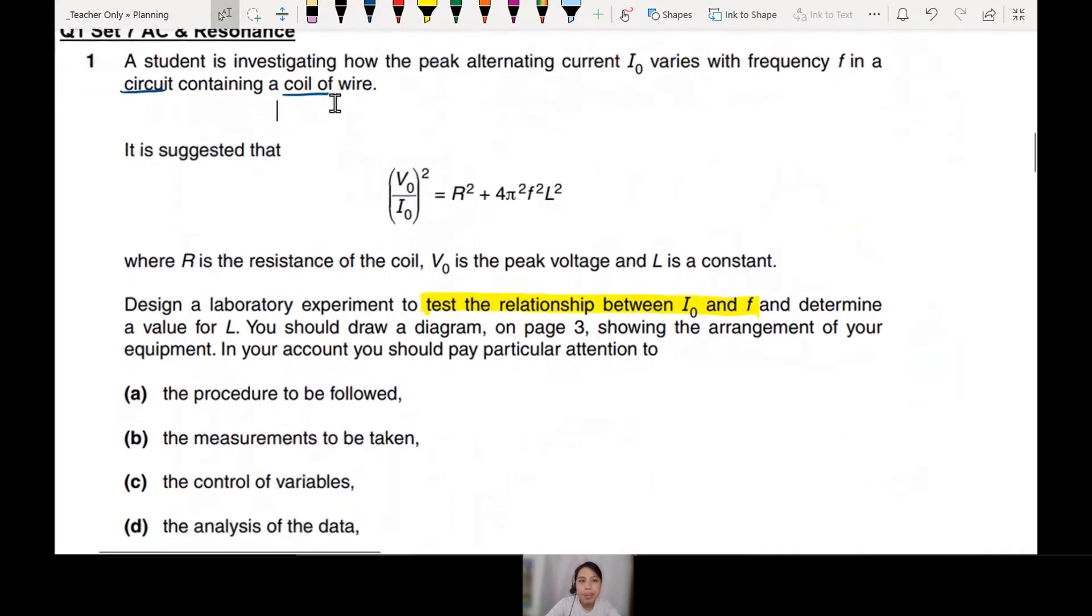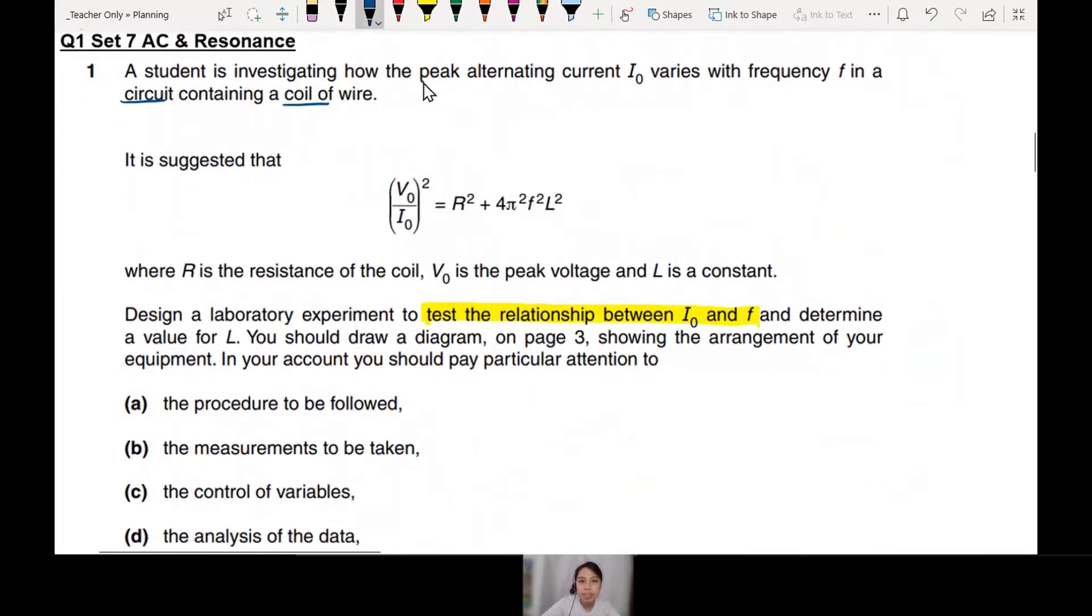You are investigating how peak currents change with frequency. Frequency - you see this, you should think of CRO, signal generator, or AC supply. Coil, can draw solenoid or something like that. Resistance of the coil. So how to draw?